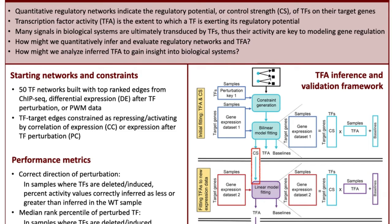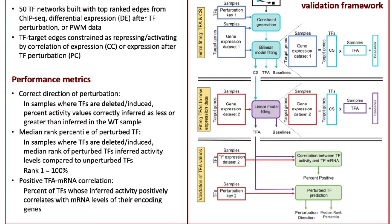In this second round of fitting, a new and independent gene expression data set is matrix-factorized into this control strength set, as well as new activity values and new gene expression baseline values. These new activity values can then be objectively validated. The first accuracy metric is simply to check whether or not we've correctly inferred the activity level of a perturbed transcription factor to have changed in the correct direction relative to the wild-type sample.